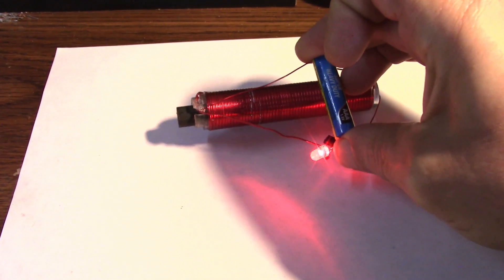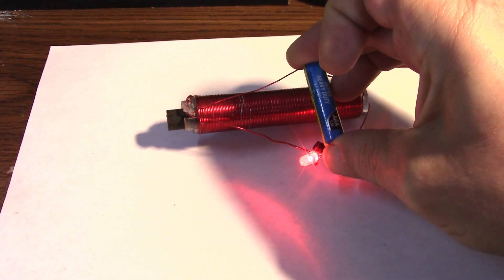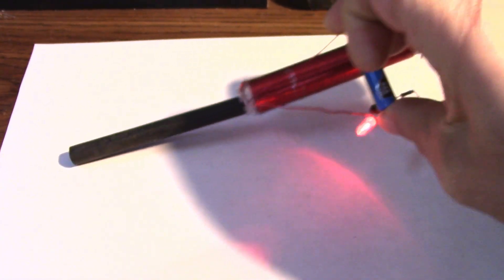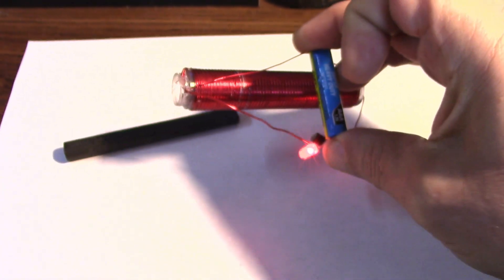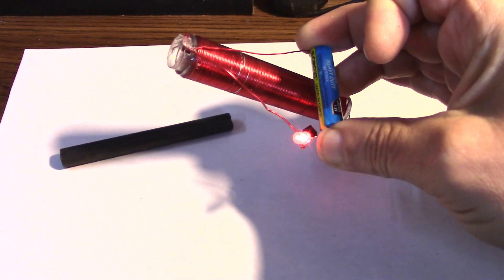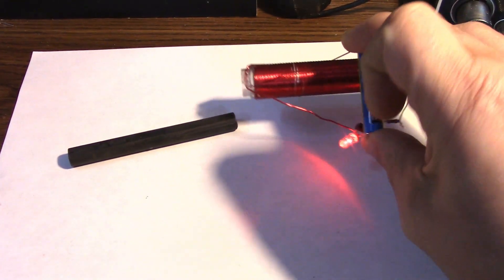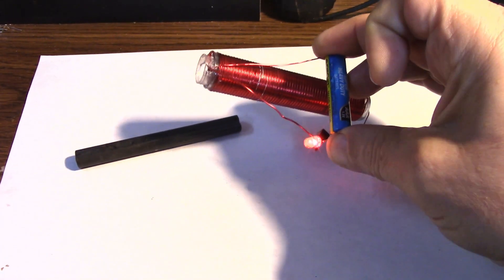Okay, now we have a ferrite core in there. And there doesn't seem to be any change at all. If I shake the thing out, and you have a look at the LED, whether there's a core there or not makes no difference, which is actually quite interesting. But there, core or not, it still works.